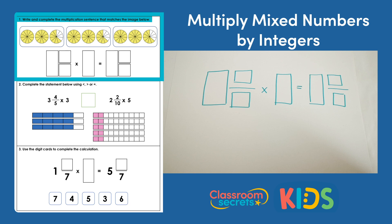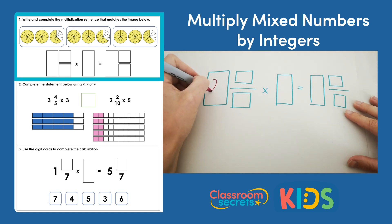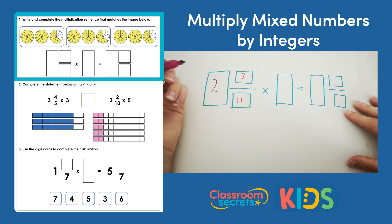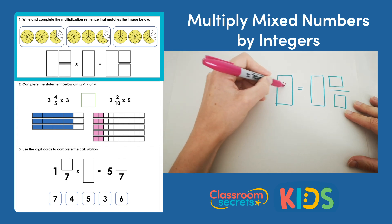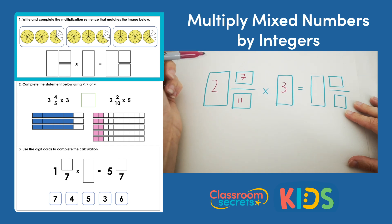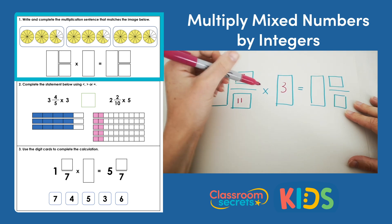Question 1: write and complete the multiplication sentence that matches the image below. The image shows three lots of the same mixed number. The mixed number is 2 and 7 elevenths. We know this because two of the circles are fully coloured in and then seven out of the 11 parts are coloured in the last fraction. So our mixed number is 2 and 7 elevenths, and there are three lots of this. So the calculation being shown is 2 and 7 elevenths times 3.